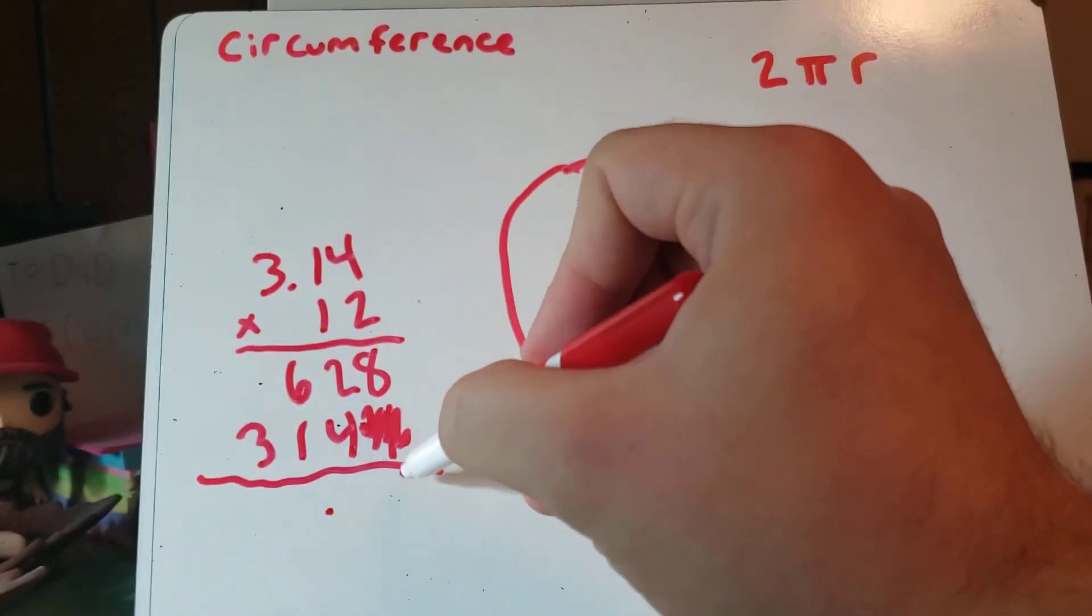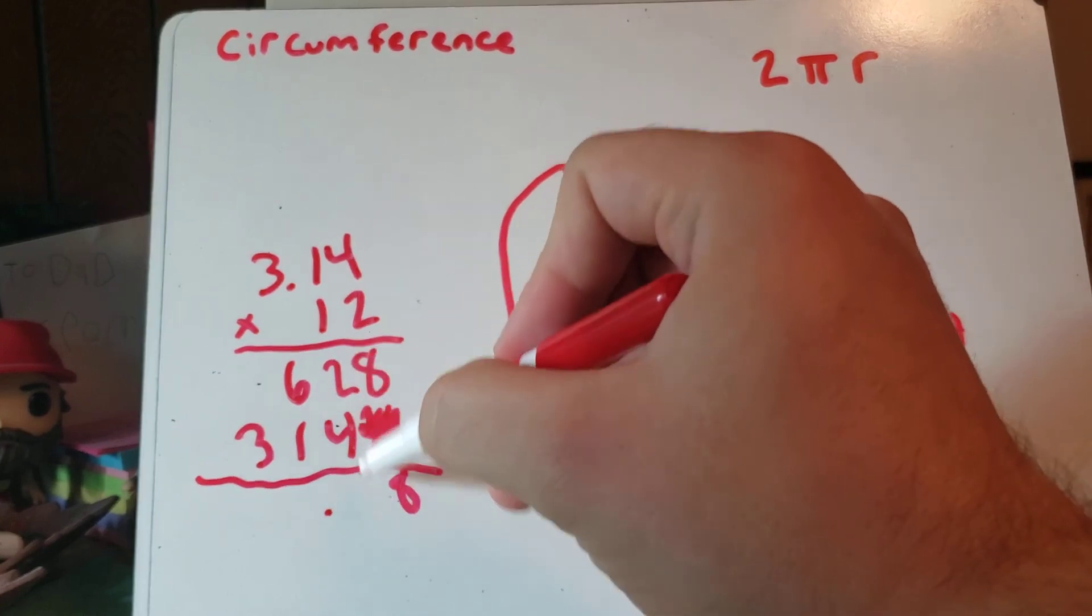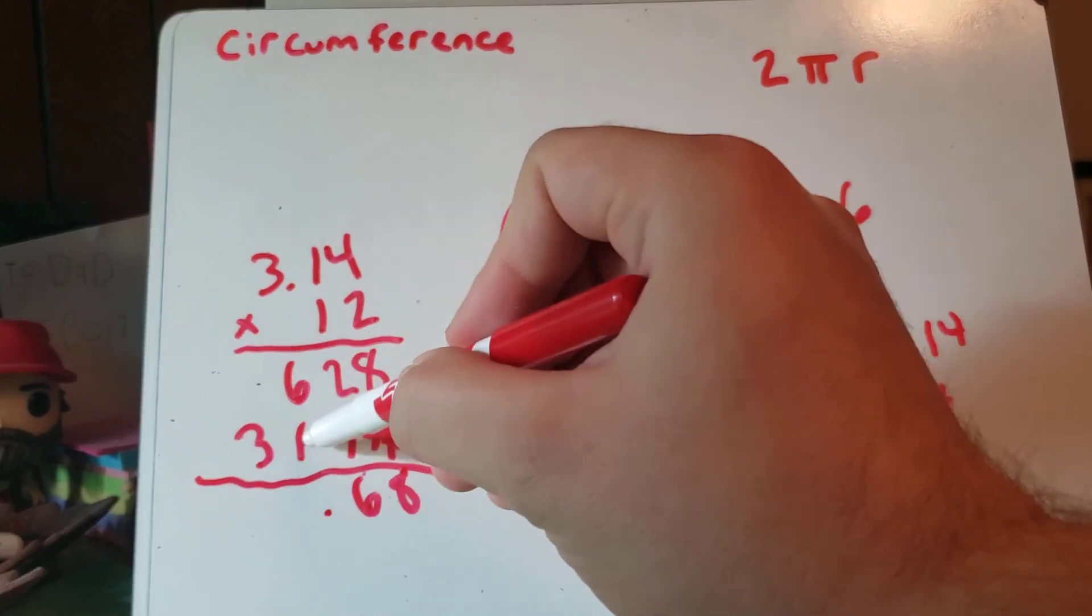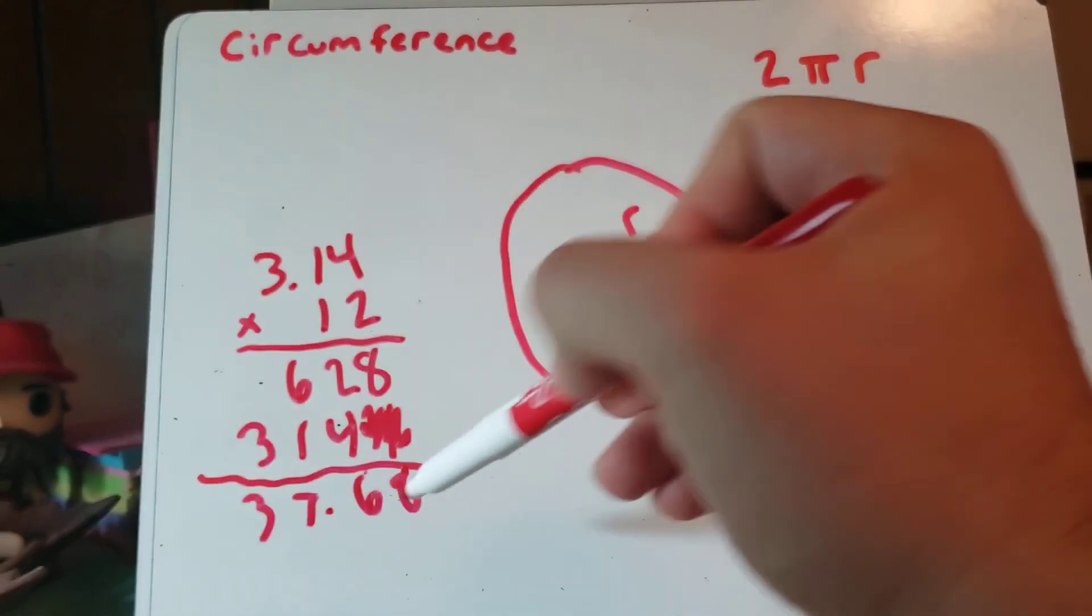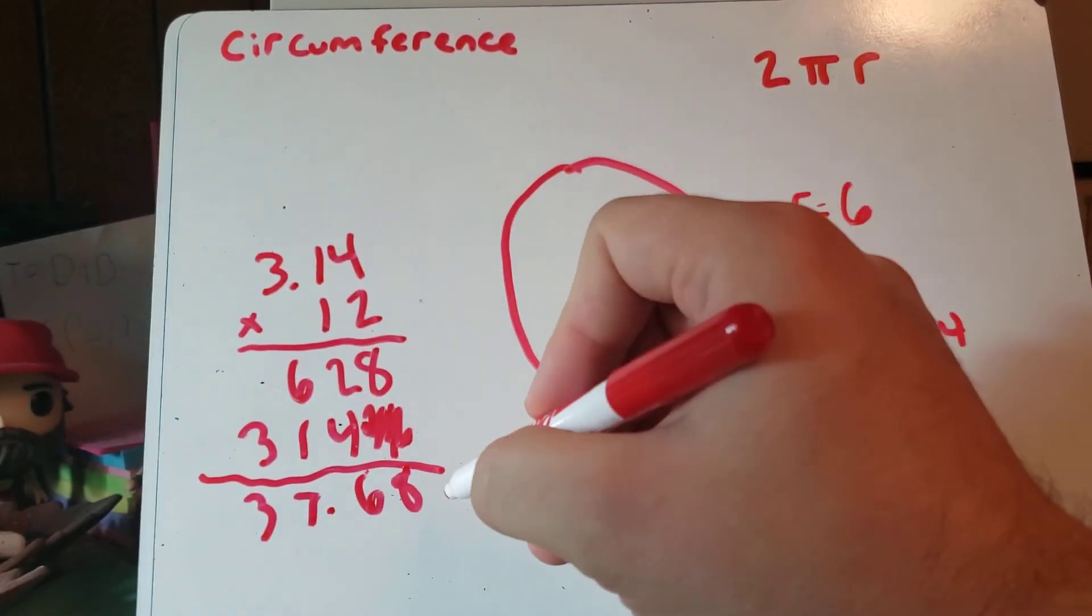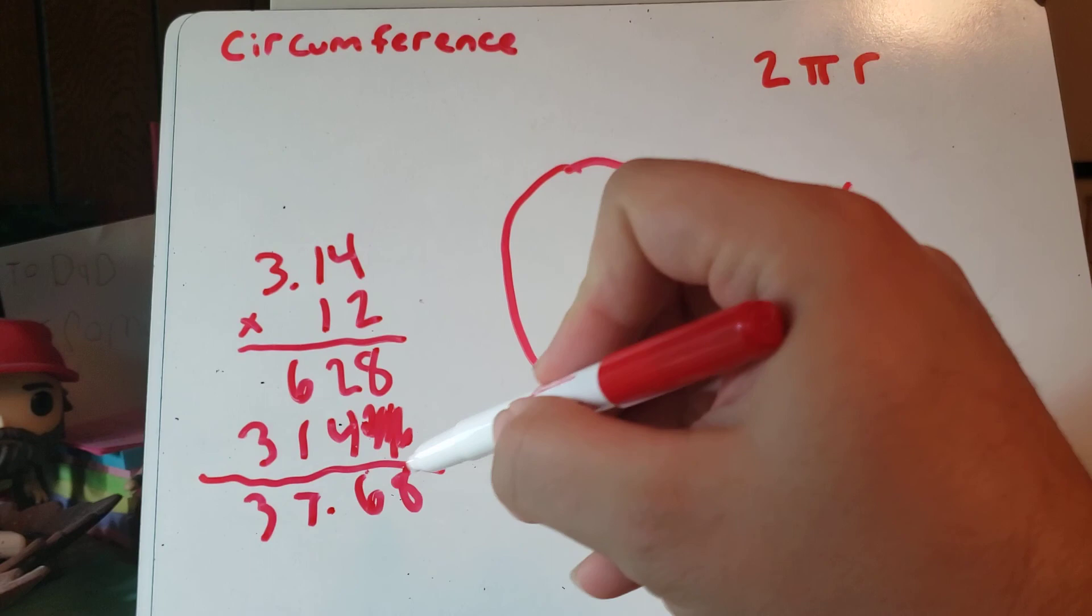We'll add this up. 8 plus 0 is 8. 2 plus 4 is 6. 6 plus 1 is 7. And 3. So the circumference of this circle here would be 37.68.